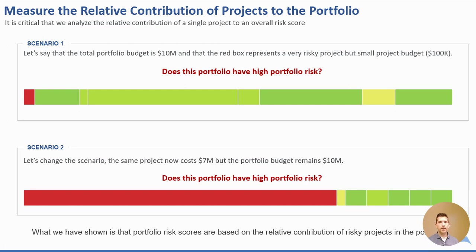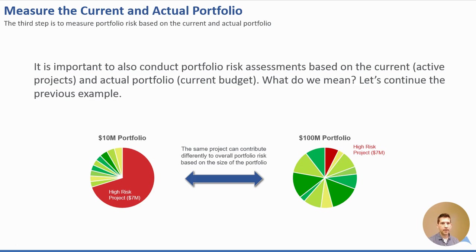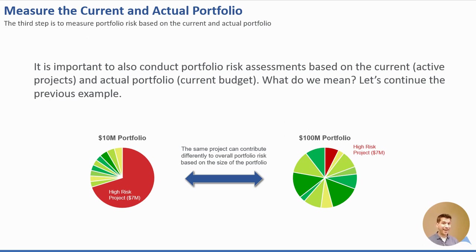We can take this a step further: if the budget changed from $10 million to $100 million, and everything else remained constant with a lot of low-risk projects, then that one high-risk project no longer makes the entire portfolio risky. The pie chart on the right illustrates this — a $10 million portfolio budget with a $7 million high-risk project versus a $100 million budget with that same $7 million high-risk project results in far lower portfolio risk. So it's dynamic. As the portfolio budget changes, as new projects come in, and as existing projects are completed or canceled, the level of risk in the portfolio changes over time.